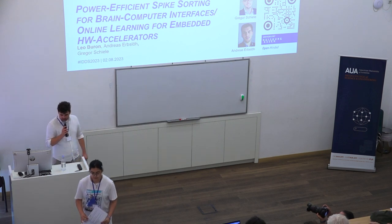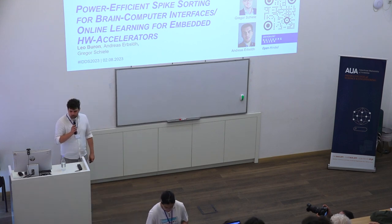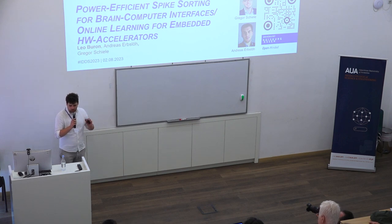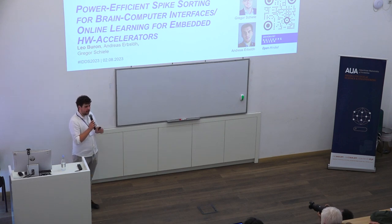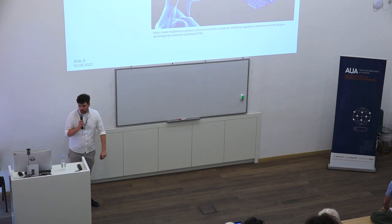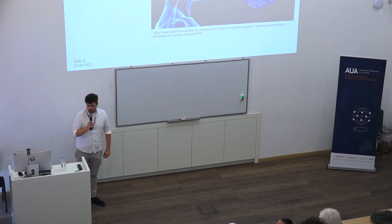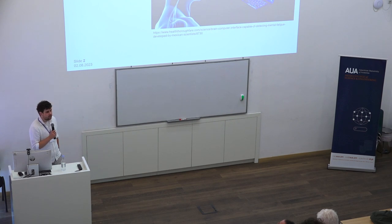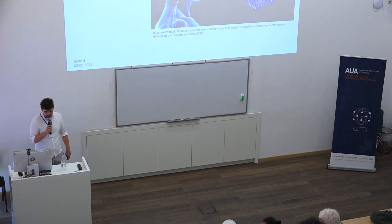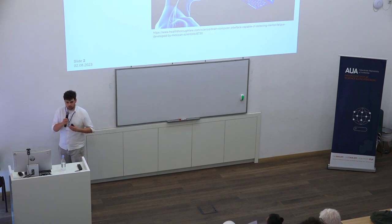I will talk today about spike sorting, why we need it to be power efficient, and why we need online learning for embedded hardware accelerators to have good spike sorting. First, let's talk about why we need brain-computer interfaces. Most of the reasons relate to patients suffering from conditions like Parkinson's with tremors, retinopathia pigmentosa causing blindness, or paralysis. With a brain-computer interface, we can increase their quality of life — for example, reducing tremors for people with Parkinson's.